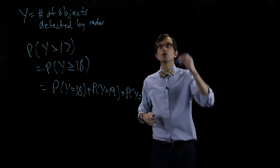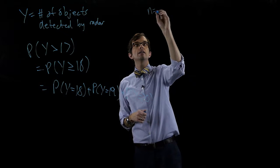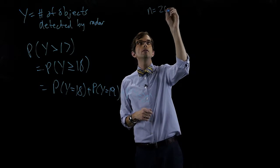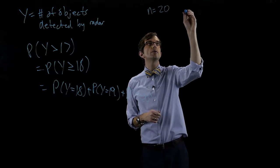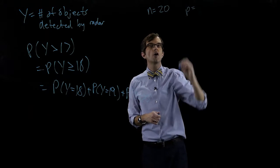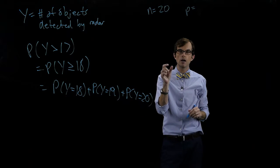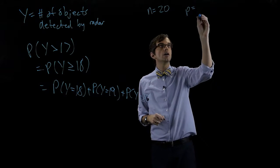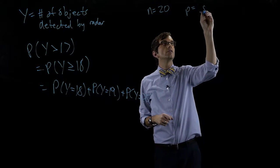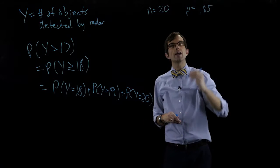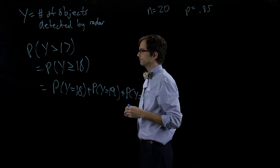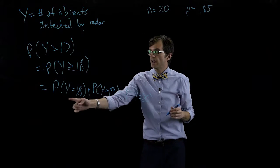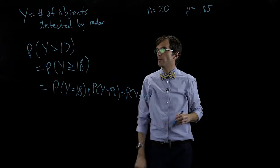Here we have n equals twenty, and p — the probability that any individual object is detected — is point eight-five. Eighty-five percent of objects are detected. So let's find each one of these probabilities.